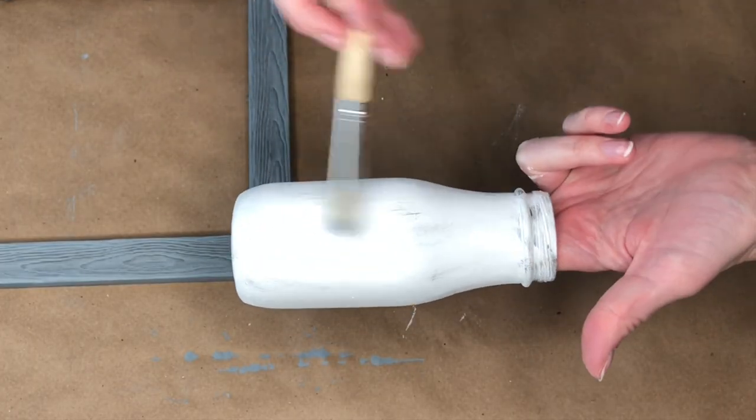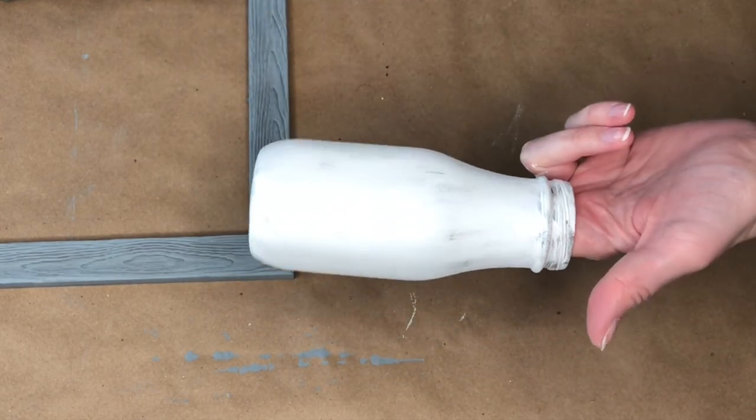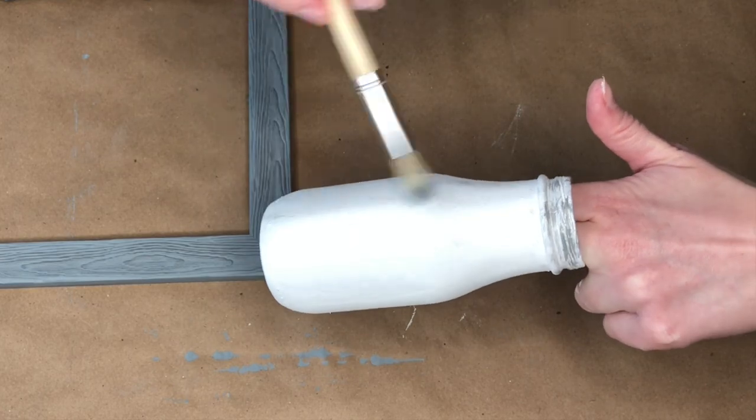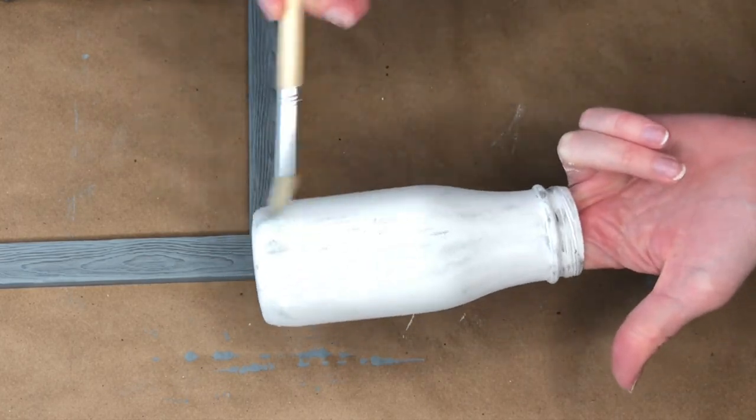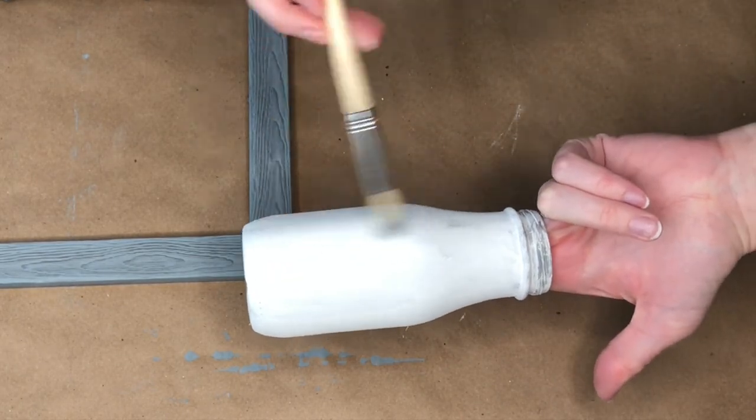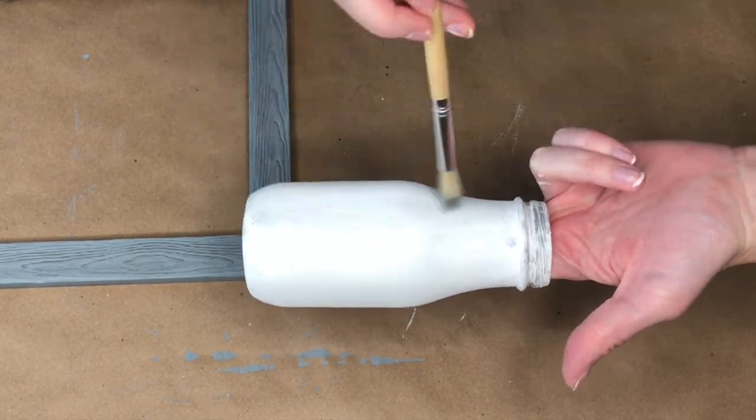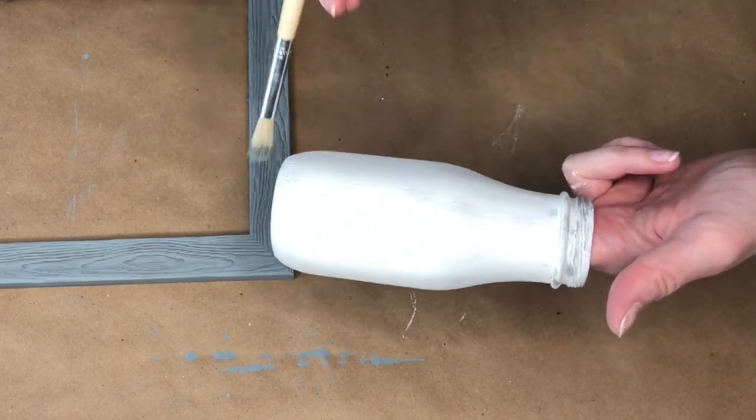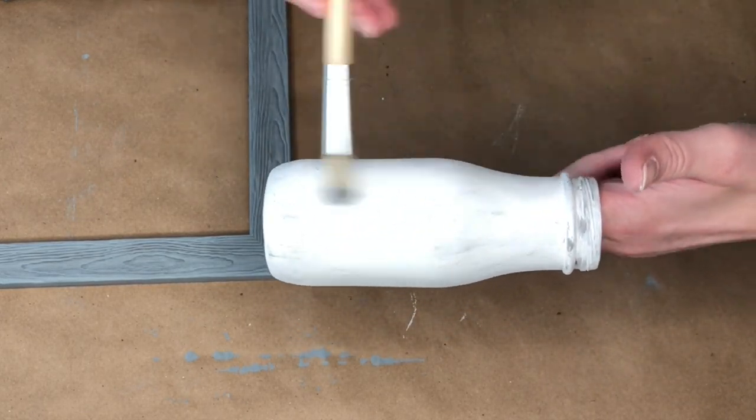And of course, it wouldn't be a farmhouse DIY video of mine if I didn't dirty up this beautifully painted glass jar that I just did. I love adding in a little bit of brown paint to just distress things. I think it adds a farmhouse touch and makes everything not look so brand new. So I'm just taking a dry brush and a little bit of brown paint and just going over this jar.